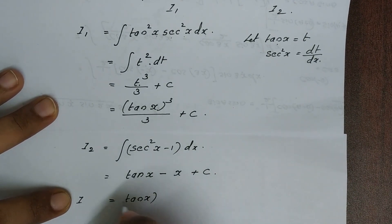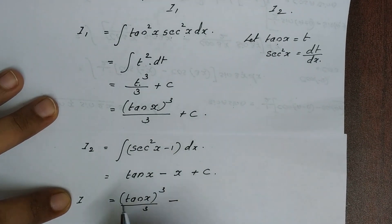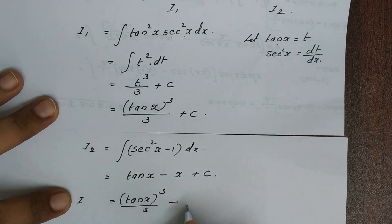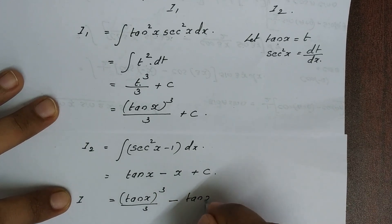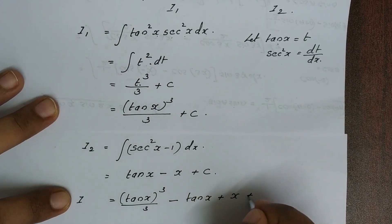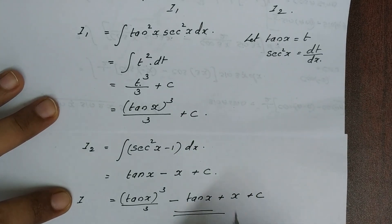So the final answer is I equals tan cubed x divided by 3, minus tan x plus x plus c.